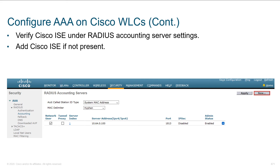When we configure AAA in the wireless LAN controller, we can talk about different things to authenticate and what things to log. Logging is handled under the accounting section. This is the same IP address — your ISE or other AAA server — but accounting happens on a different port. Port 1812 is for authentication and authorization, which kind of happens in one fell swoop, like a DNS lookup request and response. You throw it like a tennis ball at the wall and it bounces right back with those AV pairs.